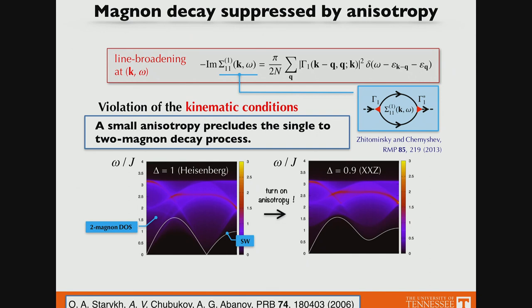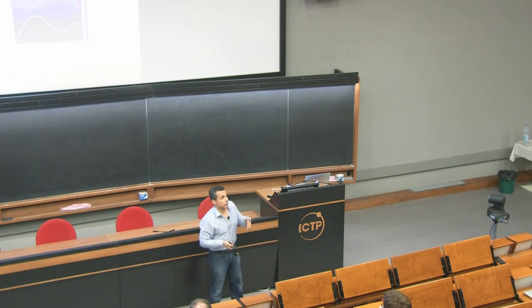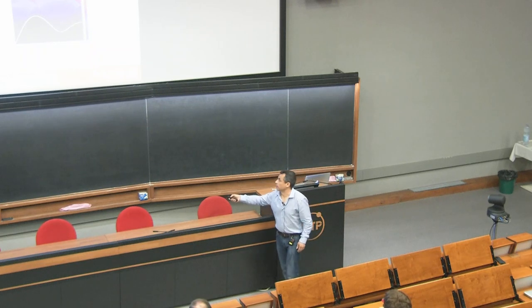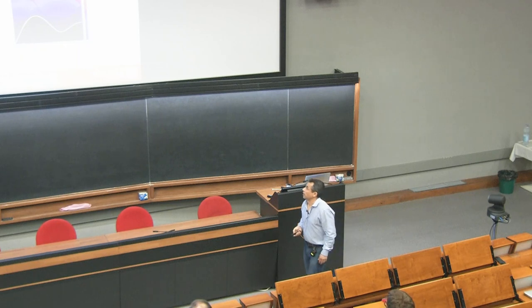Why does the semi-classical approach fail to produce strong renormalization? In the isotropic limit you have two types of Goldstone modes: one around k=0 (the gamma point) and two around ±K. These Goldstone modes have different velocities, meaning a magnon with higher velocity around the gamma point can decay into two magnons at K and -K. Because the ordering is non-collinear, cubic processes are allowed, so single-magnon modes enter the two-magnon continuum, leading to broadening of the single-magnon line and strong renormalization of the magnon bandwidth.